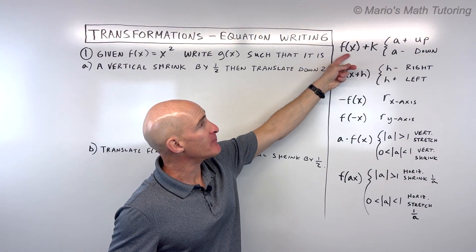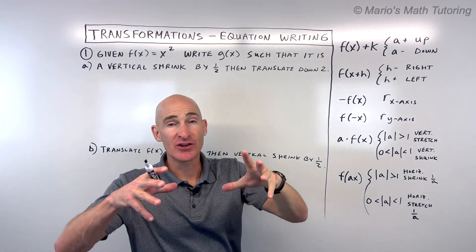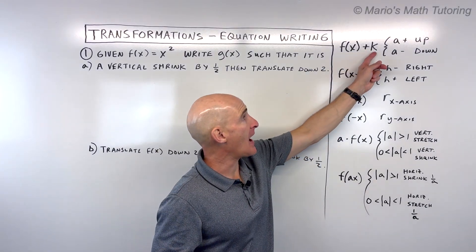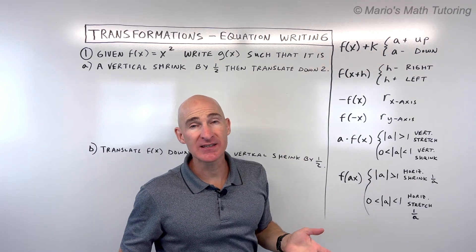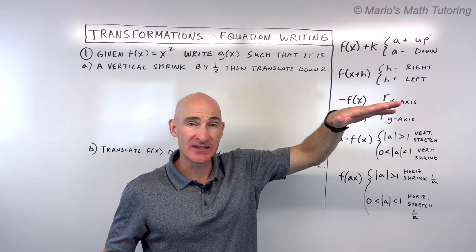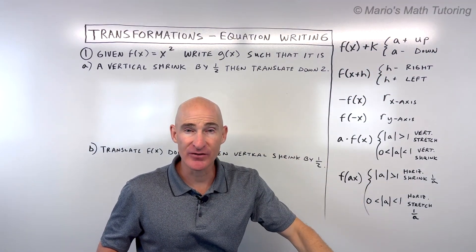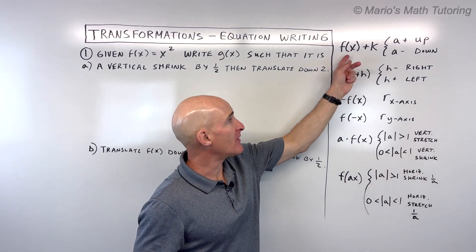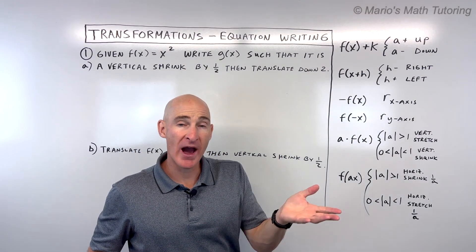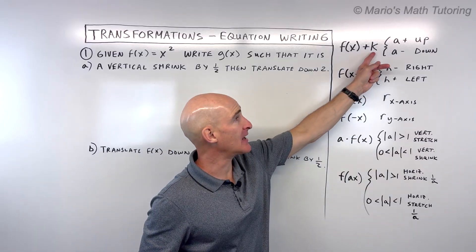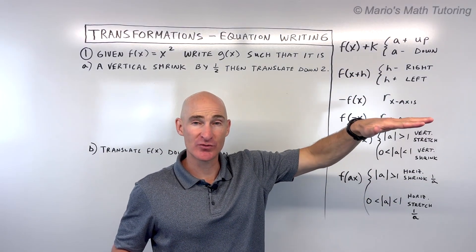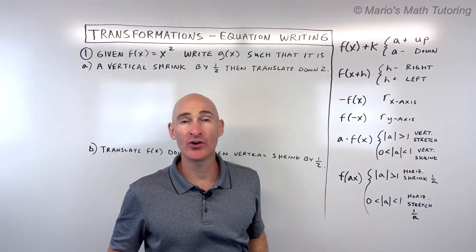When you look at f of x, that represents your original function. If you add this k value to it, if it's positive it's going to shift the graph up; if it's negative, it's going to shift the graph down. So when you think of f of x, it's kind of like the y values. Y is the vertical direction. By adding two to that, you're going to shift it up two; if you're subtracting two, you're going to go down two.